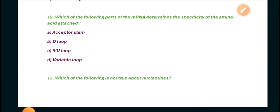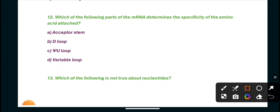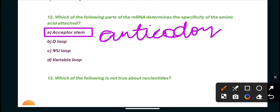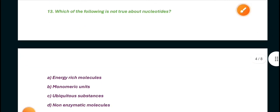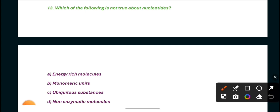Question 12: Which of the following parts of the tRNA determines the specificity of the amino acid attached? The answer is acceptor stem. If acceptor stem is not available as an option, then the answer is also anticodon, the anticodon loop. Next, which of the following is not true about nucleotides? Then non-enzymatic molecule. This is the answer because nucleotides are known to be enzymatic molecules.